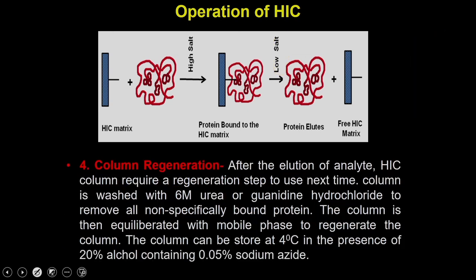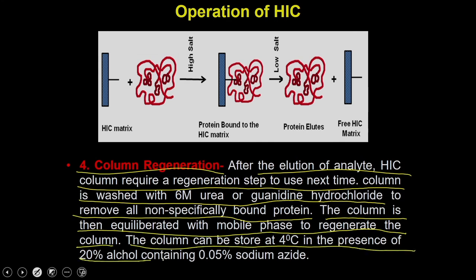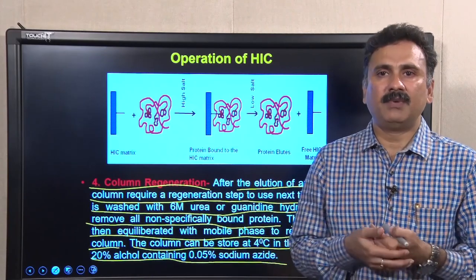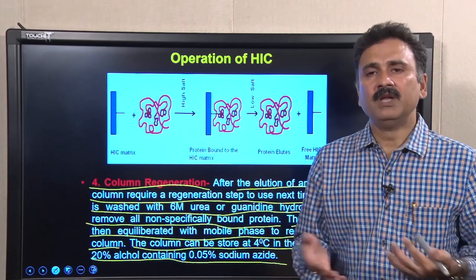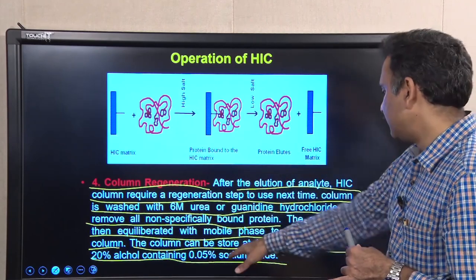Once the column run is over, you must regenerate the column. After elution of the analyte, the HIC column requires a regeneration step for reuse. The column is washed with 6 molar urea or guanidinium hydrochloride to remove all non-specifically bound proteins. The column is then equilibrated with the mobile phase to regenerate it, and ultimately stored at 4°C in the presence of 20% alcohol containing 0.05% sodium azide to prevent growth of bacteria or microorganisms, since most of these columns are made of sugar.